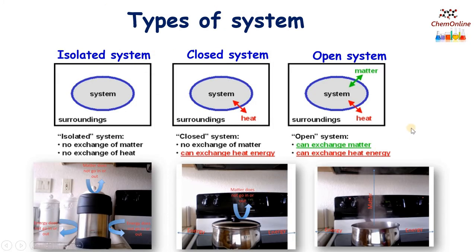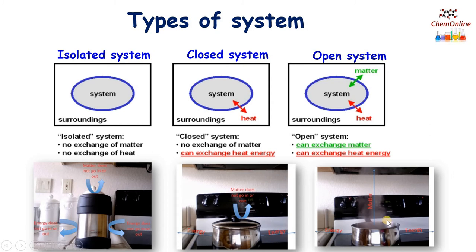Next are the different types of systems in thermodynamics. Broadly, they are classified into three types: open system, closed system, and isolated system. An open system is one which can exchange both matter and energy. A simple example is boiling water in an open saucepan — water can escape as matter, and heat energy is exchanged with the surroundings. So an open system can exchange matter as well as energy with the surroundings.